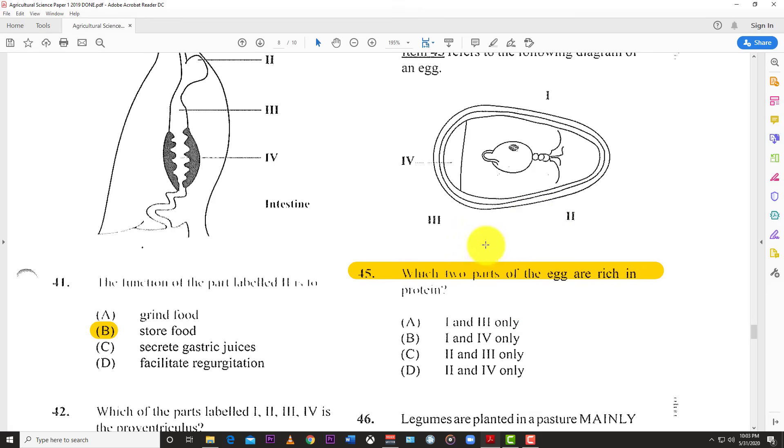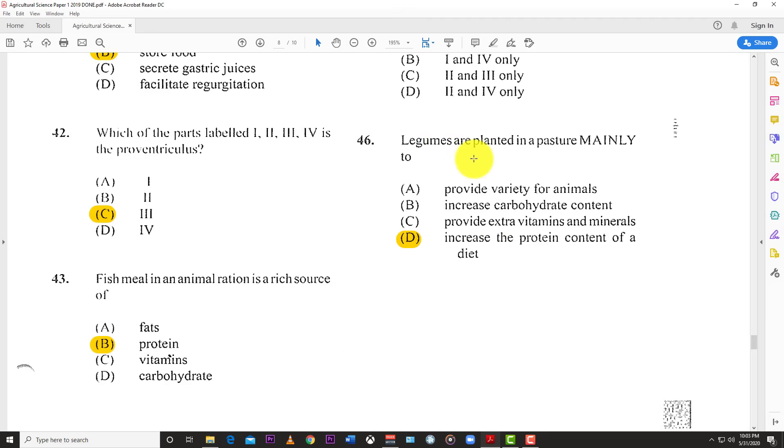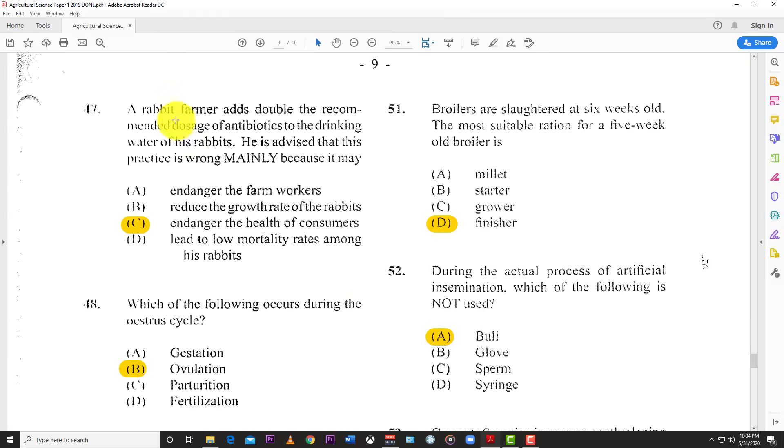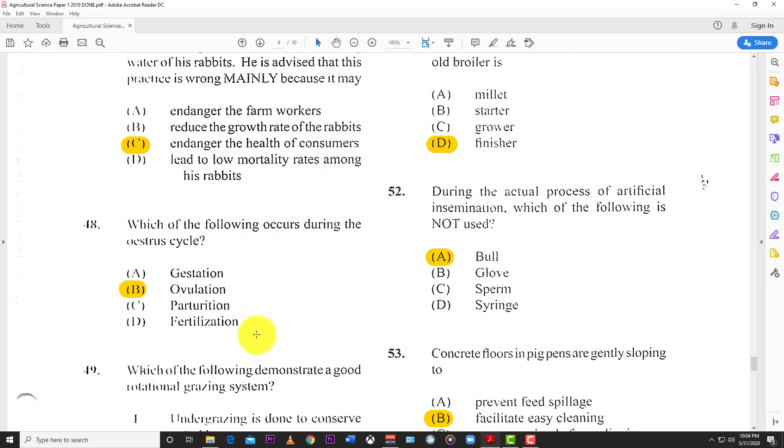Number 46: Legumes are planted in pasture mainly to increase the protein content of the diet. You add legumes to the pasture to improve the protein content of the animal's diet. Number 47: A rabbit farmer adds double the recommended dosage of antibiotics to the drinking water. He is advised this practice is wrong mainly because it may endanger the health of customers. You don't want it to stay in the system too long and endanger people who might be eating the rabbit.